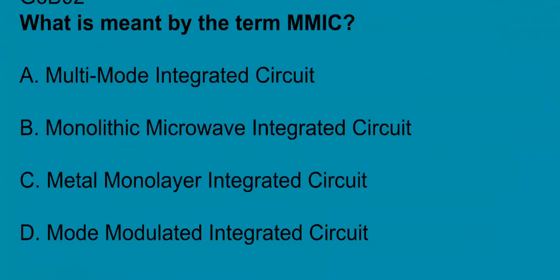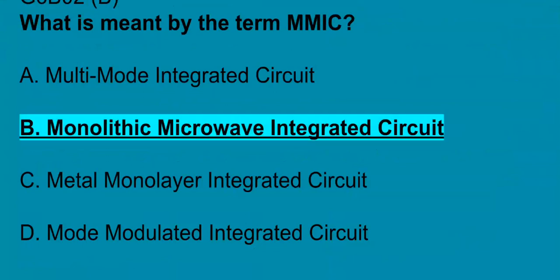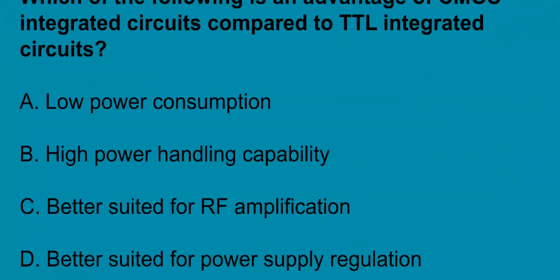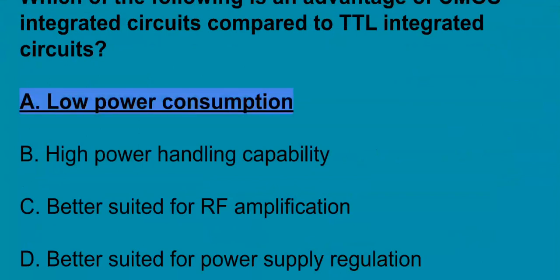G6B02, what is meant by the term MMIC? Monolithic microwave integrated circuit. G6B03, which of the following is an advantage of CMOS integrated circuits compared to TTL integrated circuits? Low power consumption.